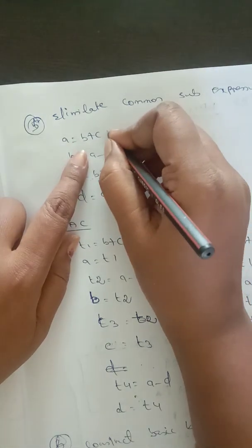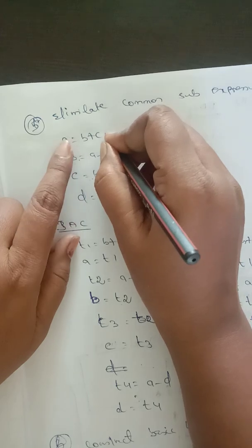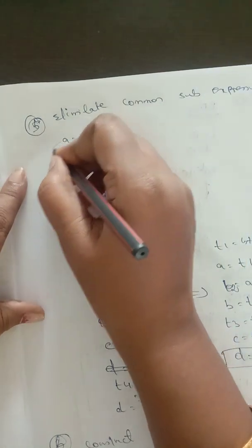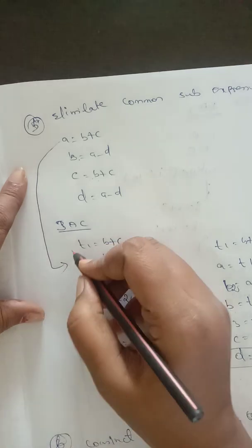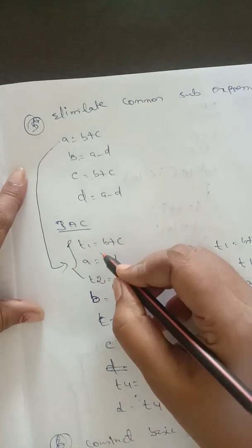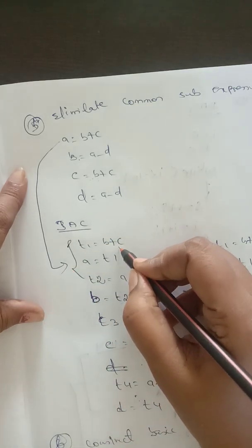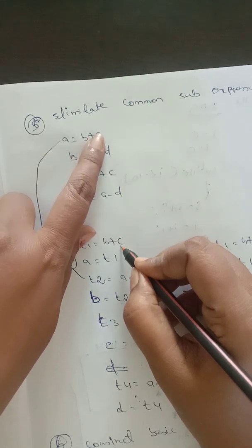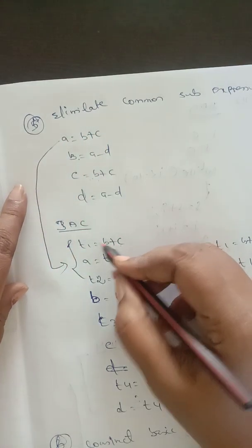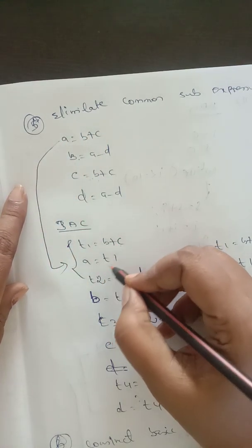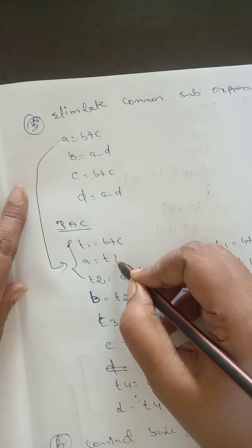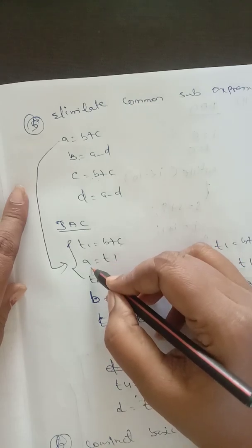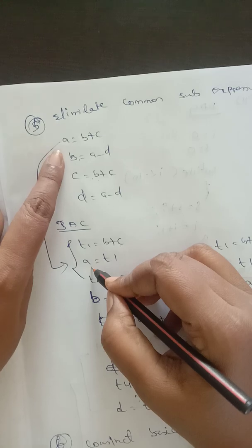For a equal to b plus c, I write the line t1 equal to b plus c, and then we assign the result of t1 into the variable a. So the first line is done.